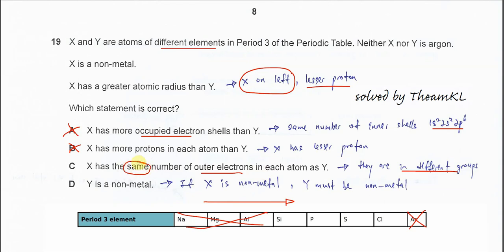It's already stated that X is non-metal. If this is X, the rest must be non-metals as well. So Y is confirmed the correct answer. D is confirmed because Y is a non-metal. That's all, thank you.